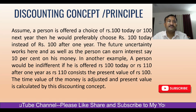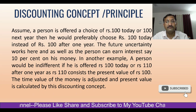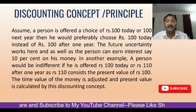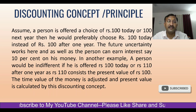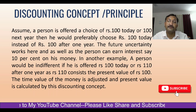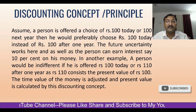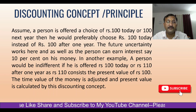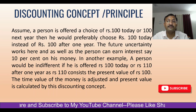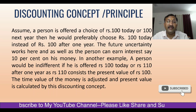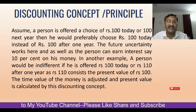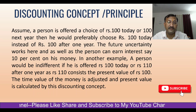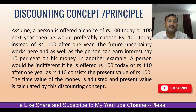Let us understand this concept with an example. Assume a person is offered a choice of 100 rupees today or 100 rupees next year. He would preferably choose 100 rupees today, because future uncertainty plays a role, and also because the person can earn interest — say 10% — on his money. He could invest those 100 rupees in a bank and earn interest on it.